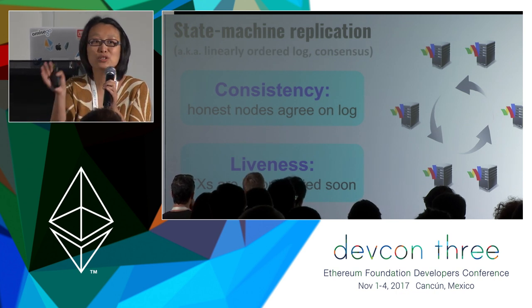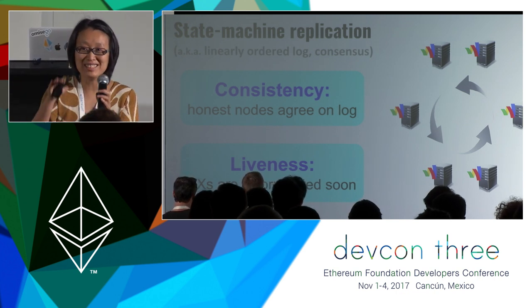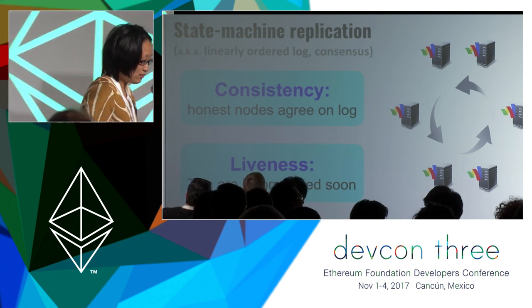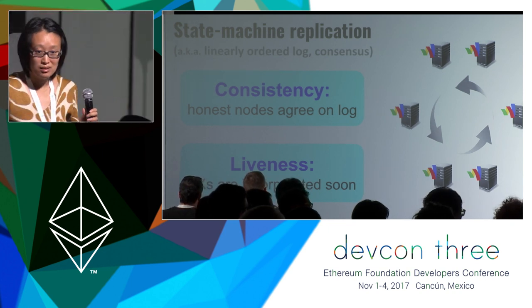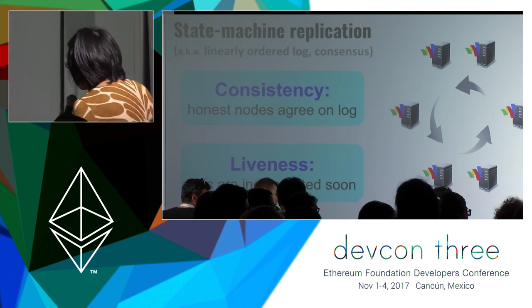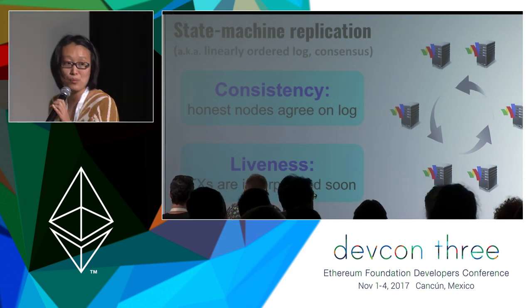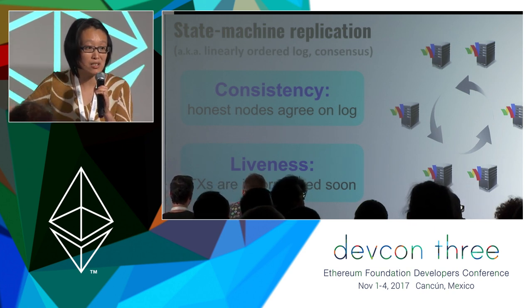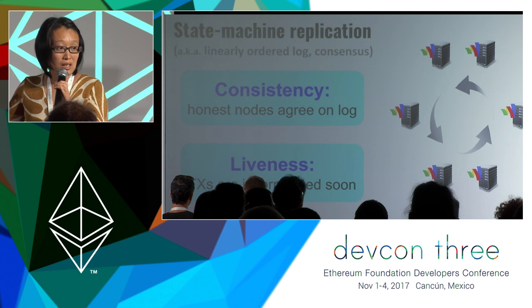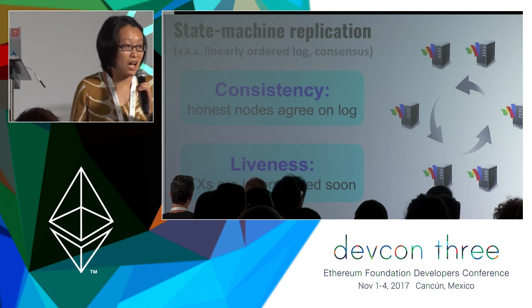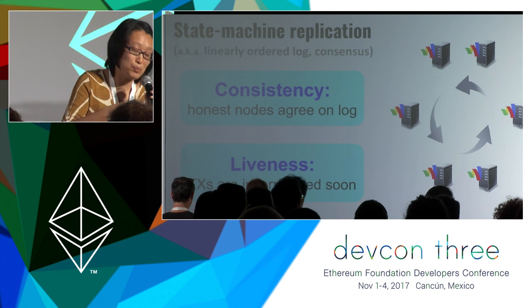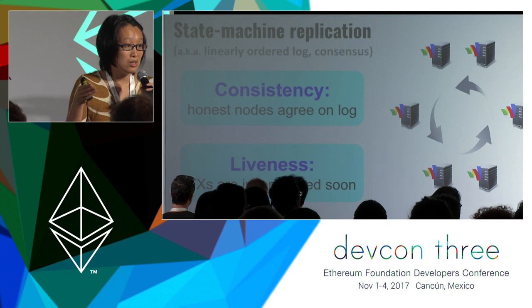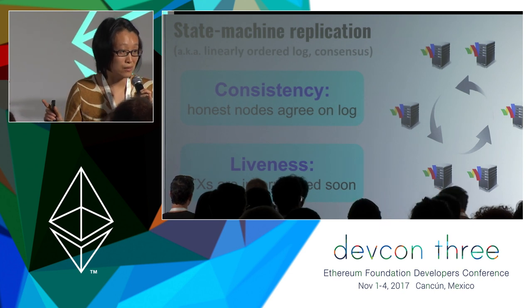Any questions? Typically there's a technical definition with a liveness parameter. The liveness parameter can be some kind of polynomial function over parameters of the execution, like the security parameter or the number of nodes. The protocol I'm going to describe confirms in about one to two rounds, but in general this parameter can be specified as a function of other parameters of the execution.